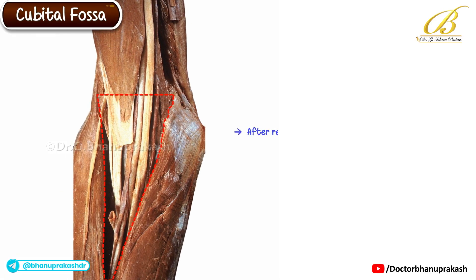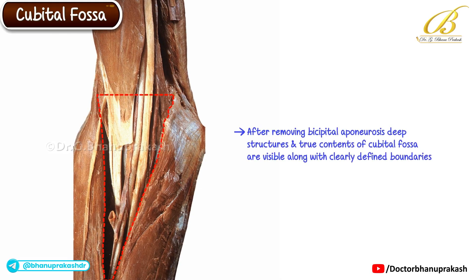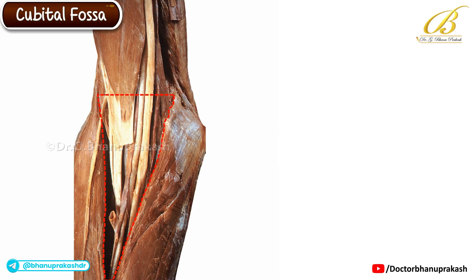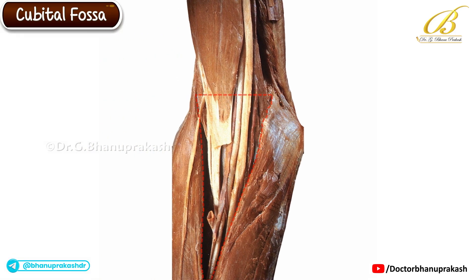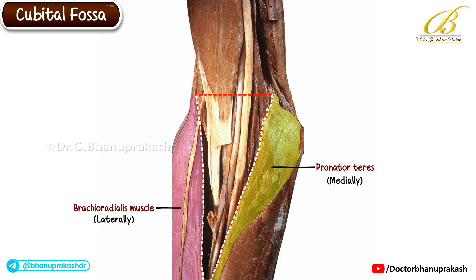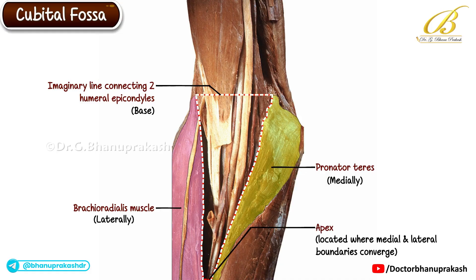Next, after carefully removing the bicipital aponeurosis, we can now observe the deep structures — the true contents of the cubital fossa along with its clearly defined boundaries. Let's first recall the boundaries: medially, it is formed by the pronator teres muscle; laterally, by the brachioradialis muscle. The base is represented by an imaginary line connecting the two humeral epicondyles, and the apex is located where the medial and lateral boundaries converge.